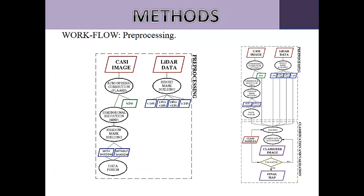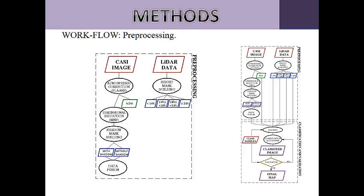From the LiDAR data digital surface model, different masks were applied to separate the different elements present in the image according to their height. There were four masks: one for data with an elevation less than or equal to 14 feet, one for data higher than 14 feet and less than or equal to 18 feet, another for data over 18 feet and under 21 feet, and a final mask for data greater than or equal to 21 feet.